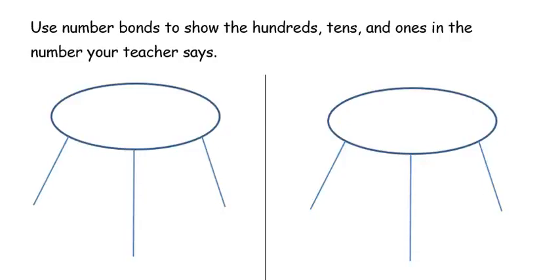This tutorial is for 2nd grade, Module 3, Lesson 5. In this lesson, we're going to use place value properties and number bonds to look at larger numbers.